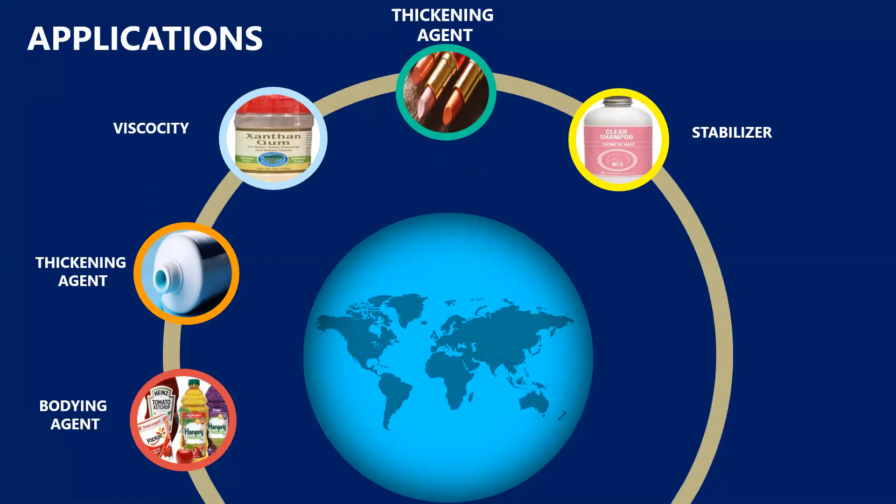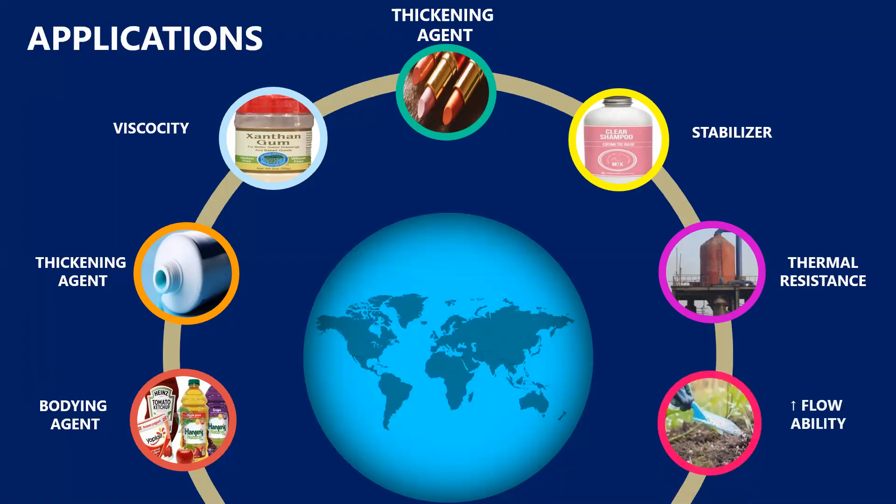It is used in oil industries for basically drilling out oil. This is due to the property that xanthan shows of thermal resistance, so it is very resistant to a range of pHs and a range of temperatures. Finally, the last application is flowability. It allows to prepare a uniform dispersion of the particular xanthan in pesticide and it can easily be sprayed.